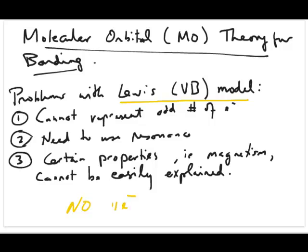The second problem with the Lewis model is that you need to use this concept called resonance, or resonance structures, in order to explain certain properties of molecules. It's a really important concept in the Lewis structure, in the Lewis model for bonding.